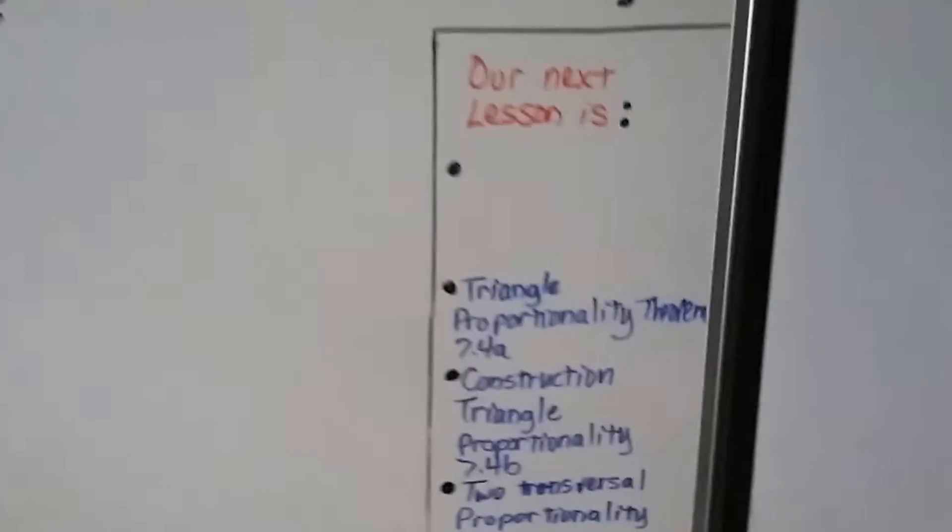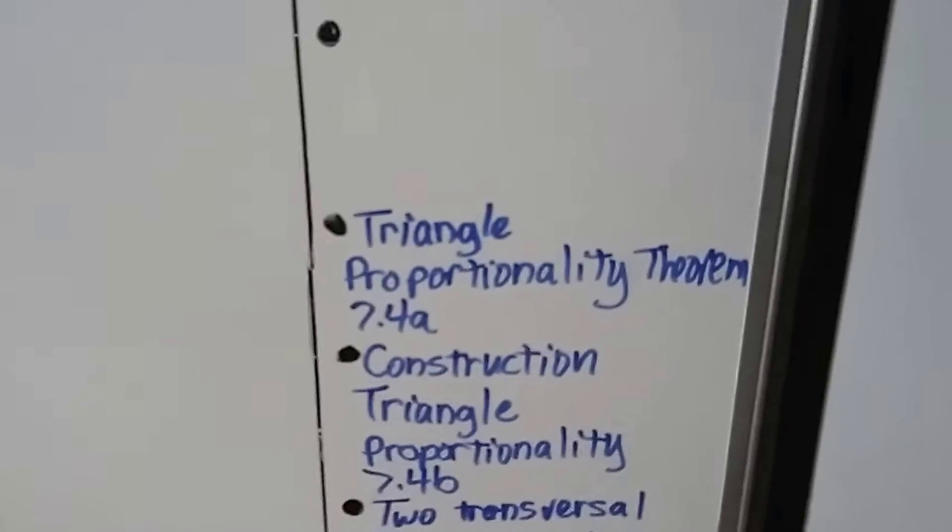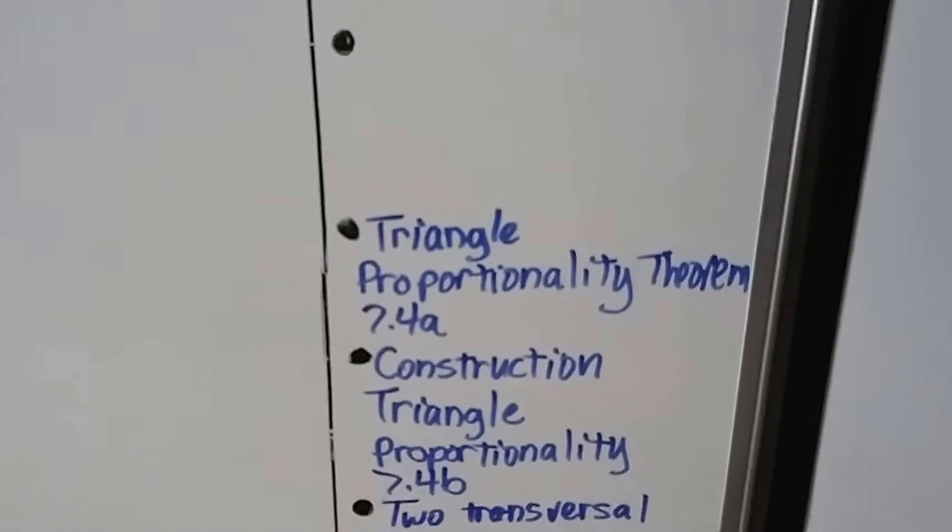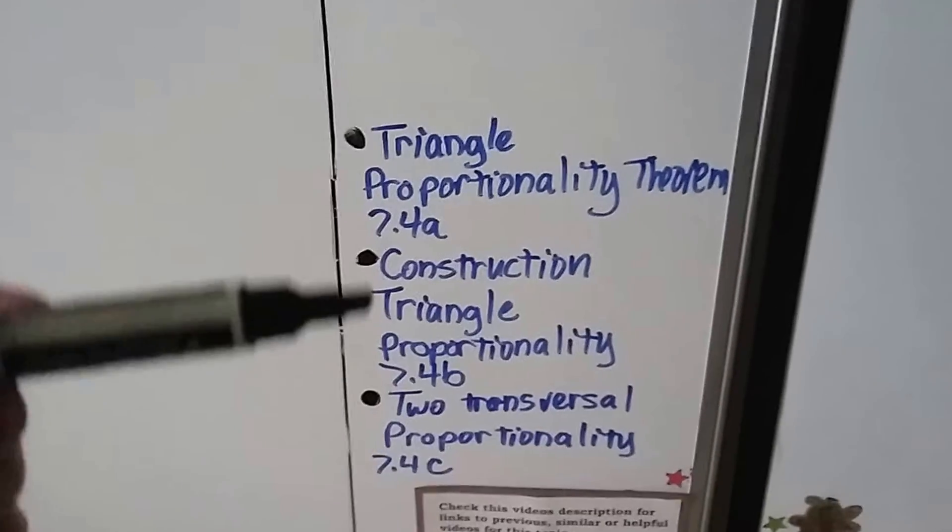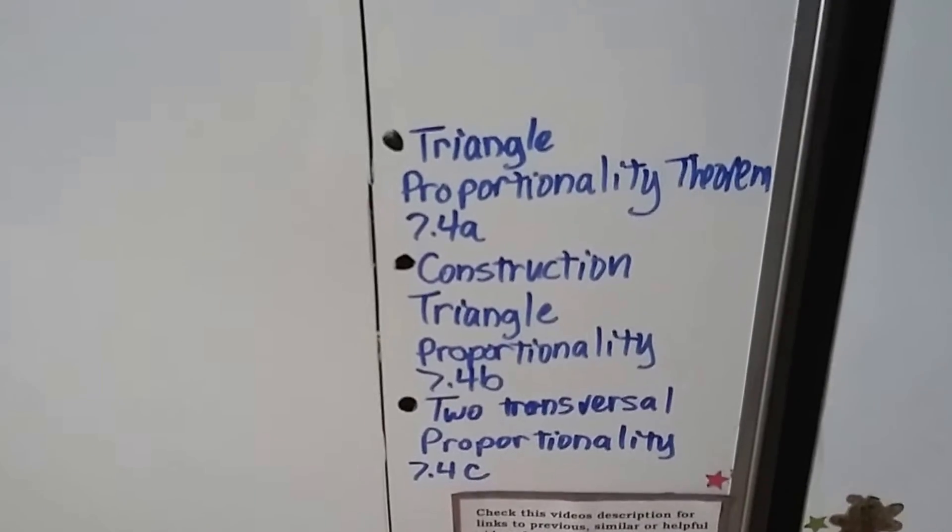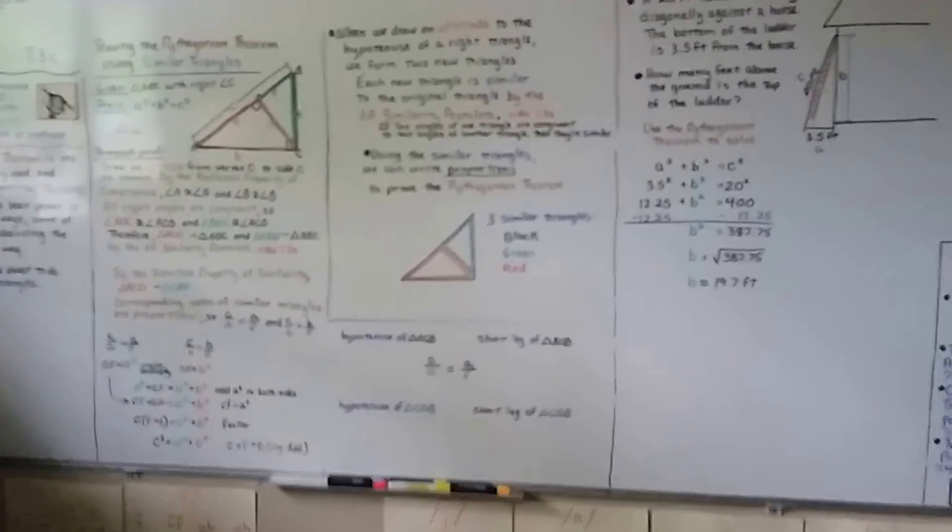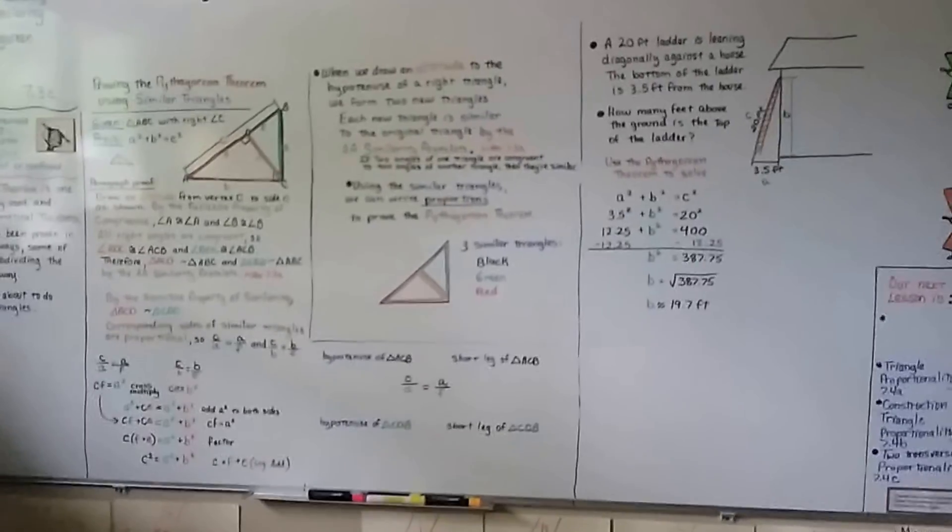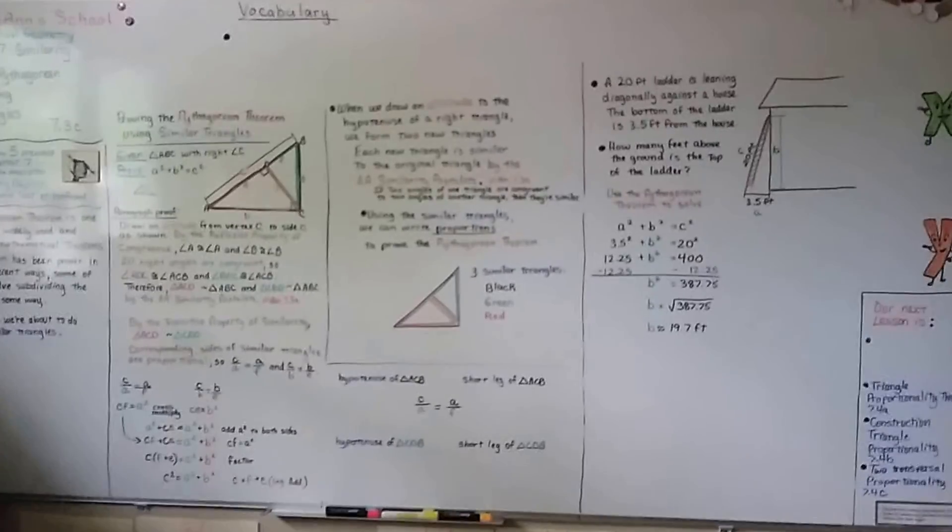Our next lesson is triangle proportionality theorem, 7.4a. Then we're going to do the rest of 7.4 with construction of triangle proportionality and 2-transversal proportionality. And I think there's even one after that. So that's the lessons that are coming up. So now we've proved the Pythagorean theorem so far in this playlist a couple of different ways. So keep trying. I'm proud of you. And I'll see you next time. Bye.